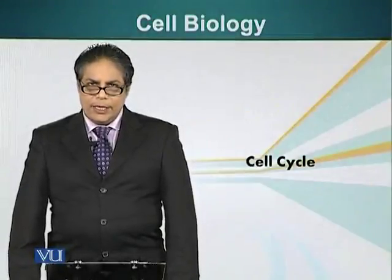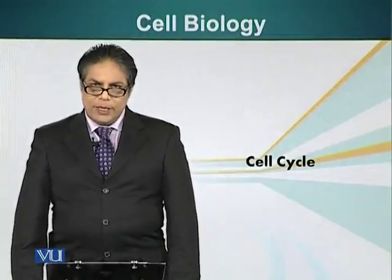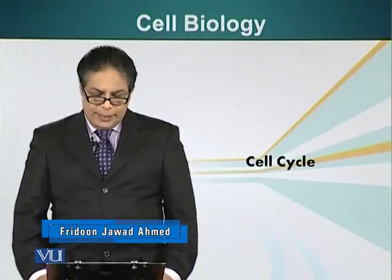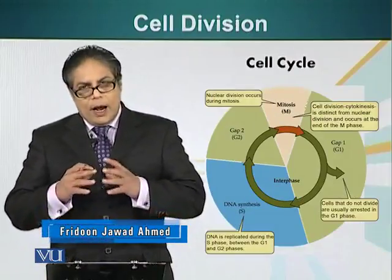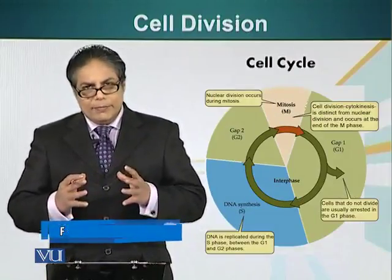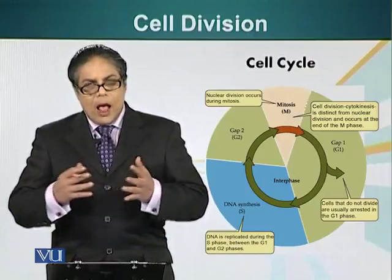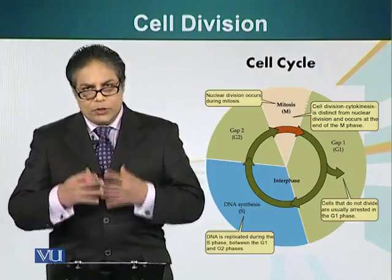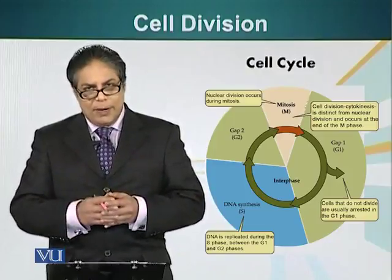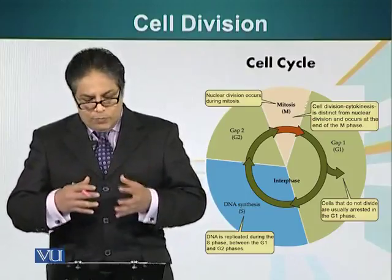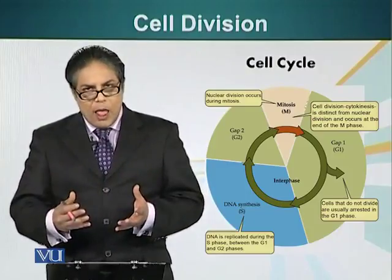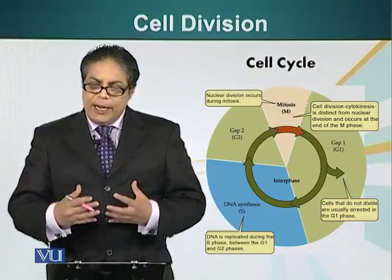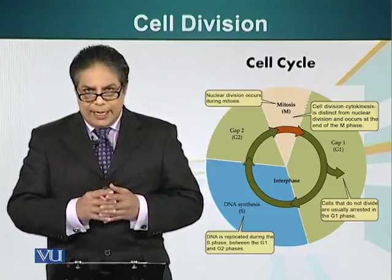Let's look at the process in more complex organisms, the eukaryotes, in which there are membrane-enclosed organelles. Higher organisms don't divide just because nutrients are available. Our cells don't divide because nutritious molecules are available in the environment — our blood is full of nutritious molecules. So if that was the criteria, our cells would keep on dividing, and it would be disastrous. That is something that happens in cancers.